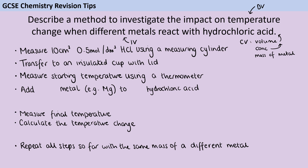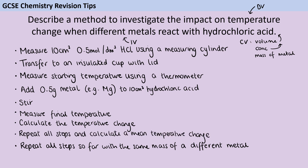I'm going to do this in an insulated cup with a lid, because in any reaction where I'm measuring temperature change I want to keep the energy transfer within that vessel — using a glass beaker would allow a lot of the released energy to transfer to the surroundings. I'll also mention adding the same mass of metal every time as a control variable, and I'll specify a volume. I would mention stirring the reaction to improve data quality, and I'll note doing the reaction for each metal multiple times to calculate a mean temperature change.